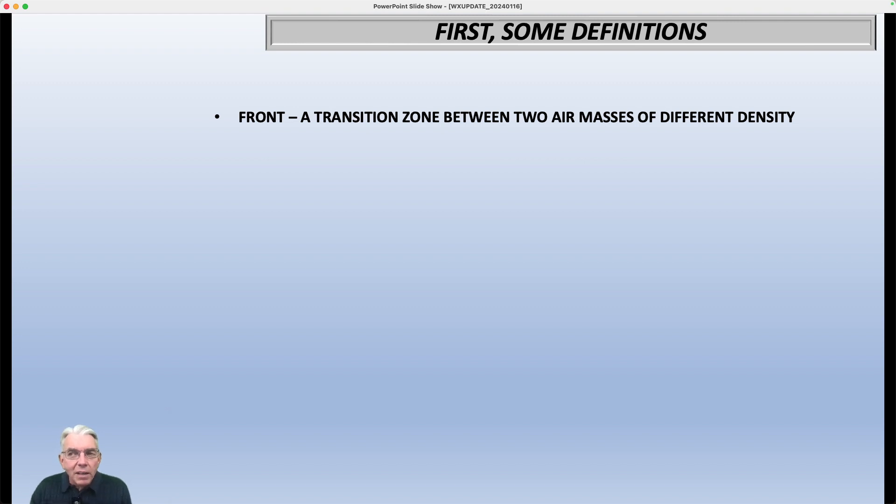And a lot of us think of a front, and this is partially true, as being that line where the wind shifts and you can feel the cold air beginning to come in. But the front itself is really just the leading edge of the transition to colder weather. In fact, as I'll show you in just a little bit here, we actually refer to these transition zones as frontal zones, as opposed to being just a single line. It's actually a band, if you will. So we'll talk more about that in just a little bit.